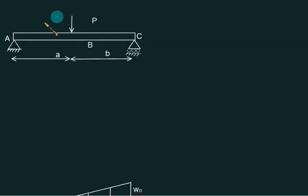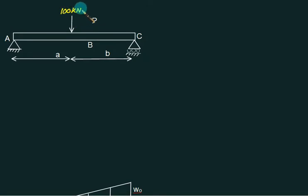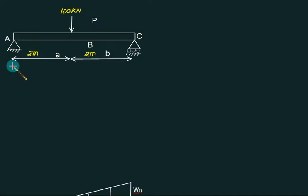We will take the first problem in this series of SFD and BMD diagrams. Consider a symmetrically supported beam with the load placed exactly at center, that is A equals B. Let the value of P equal 100 kN. In gate exam they will ask symmetrical loading questions, meaning the load is symmetrical above both supports. Because of symmetry, the reaction at both ends will be divided equally, so reaction at each end equals 50 kN.